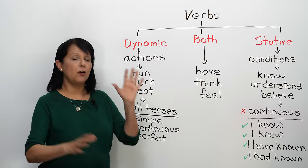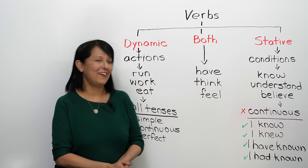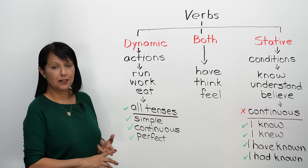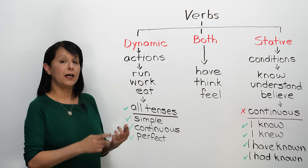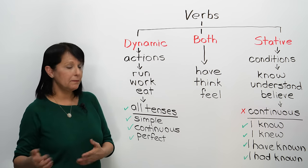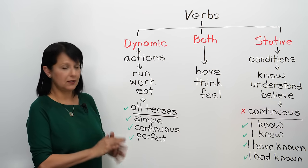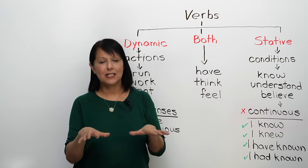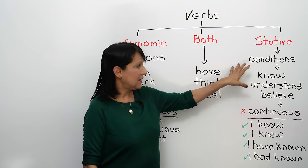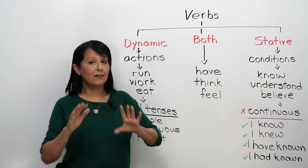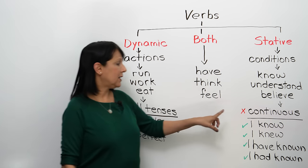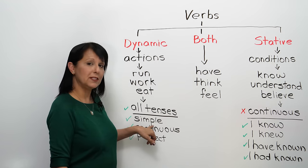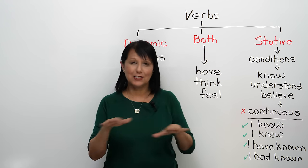So these verbs you can use in all of the wonderful tenses of English. For example, I could say: I work or I worked. I am working or I was working. Or I have worked or I have been working. I can use it in the simple tense or the continuous tense, no problem. But what happens when we get to the stative verbs — and this is the main mistake that people make — is that because it refers to a state or condition, we cannot use it with all the tenses. We can only use these verbs in anything but the continuous. So we can use it with the simple tense or with the perfect tense, but not in a continuous form.